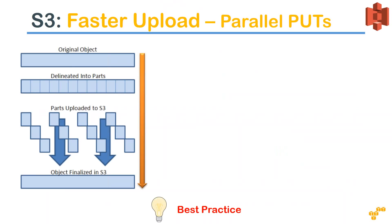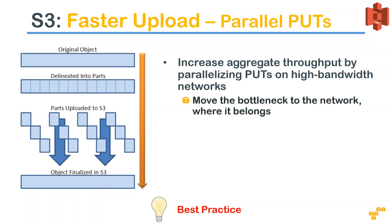Another option Amazon offers is multipart uploads, also called parallel puts. If you have a large file — say 1 GB — you split it into multiple parts, for example 10 parts of 100 MB each. You write a program that uploads each 100 MB part in 10 different parallel streams to your S3 bucket. When the parts arrive, Amazon reassembles them into a single finalized object in S3.